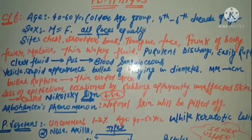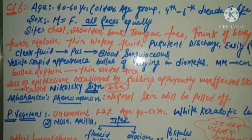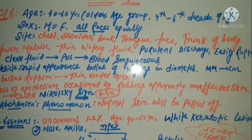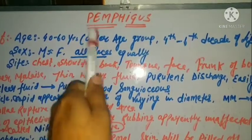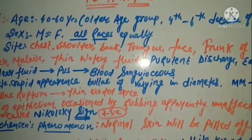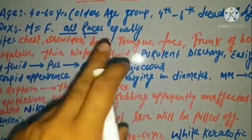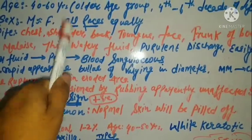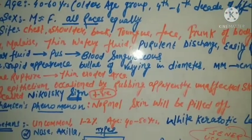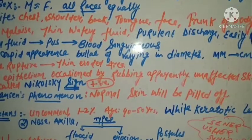Discussing the clinical features of pemphigus: the age group affected is 40 to 60 years — the fourth to sixth decade of life. Regarding sex, males and females have equal predilection, and all races are equally affected. The sites more commonly affected include the chest, shoulder, back, tongue, face, and trunk of the body.